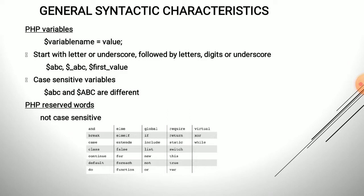All variable names begin with a dollar symbol. A variable name can start with a letter or an underscore, followed by any number of letters, digits, or underscores. For example: $a, $b, $c, $_abc, $first_value — all of these are valid variable names. PHP variable names are case sensitive.